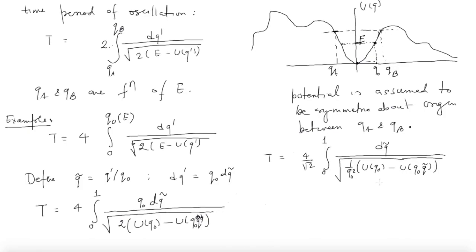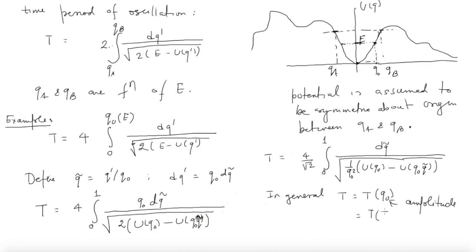Note that in general this time period of oscillations will be a function of Q₀, and Q₀ is really the amplitude of oscillations — it is the maximum distance the system reaches, which is determined by the energy. So in general T is a function of Q₀ (the amplitude), or equivalently T is a function of the total energy E.